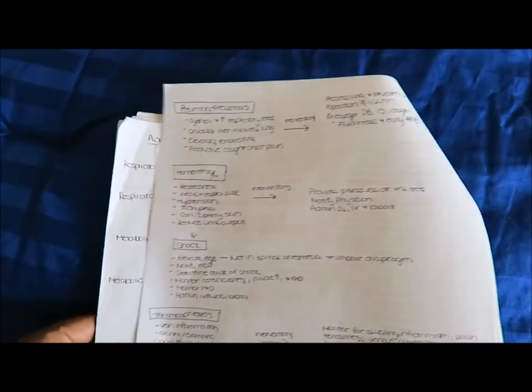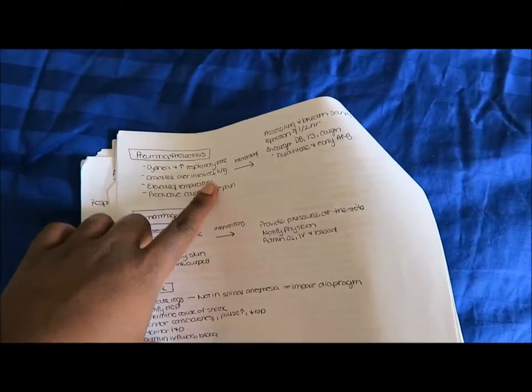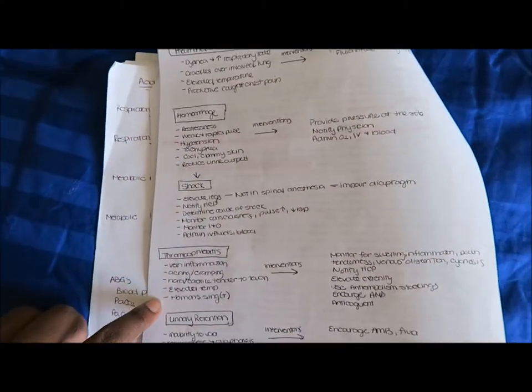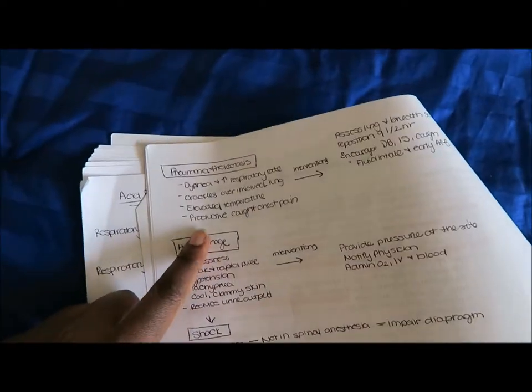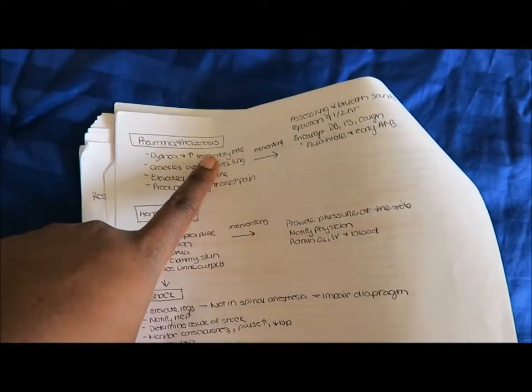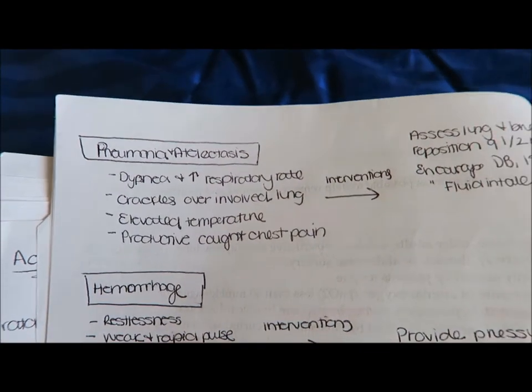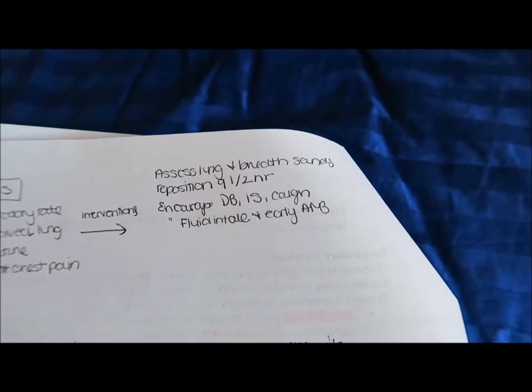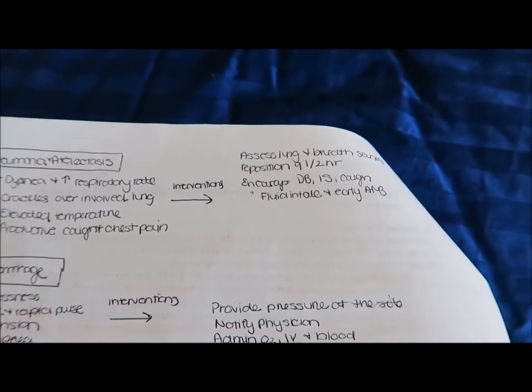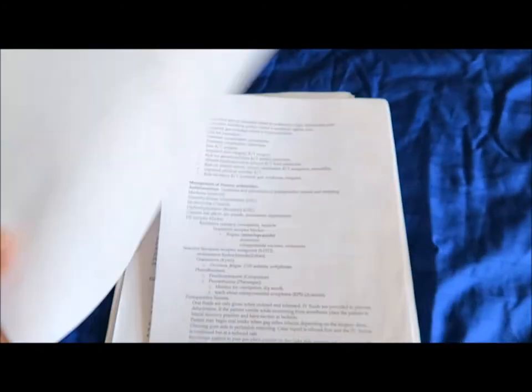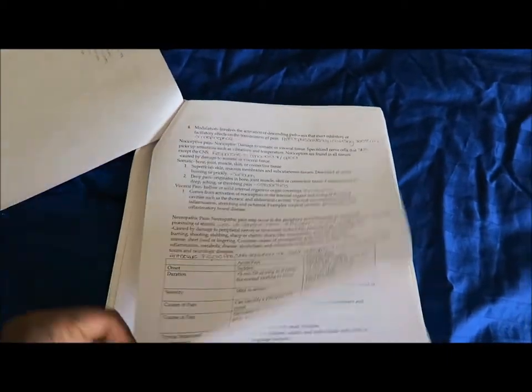Complications after surgery: pneumonia and atelectasis, hemorrhage, shock, thrombophlebitis, urinary retention, constipation. I wrote down things you'll see. In pneumonia and atelectasis: dyspnea, so the person will have trouble breathing, respiratory rate will be increased, you'll hear crackles in the lungs, elevated temperature, productive cough, and chest pain. Interventions: assess the lung and breath sounds, reposition every half hour, encourage deep breathing and coughing, increase fluid intake, and early ambulation.